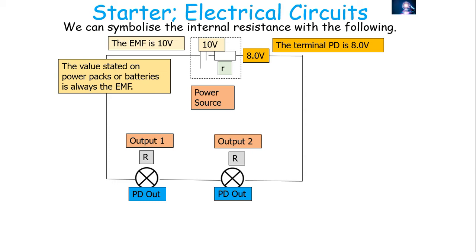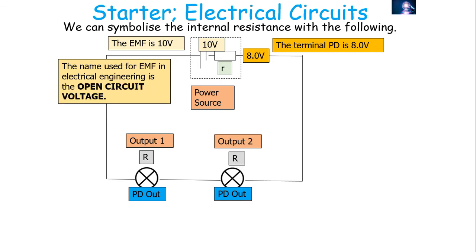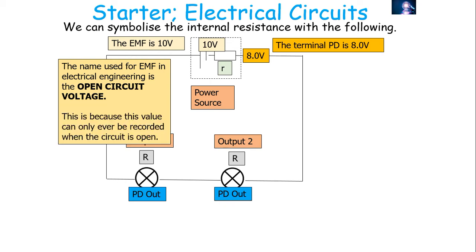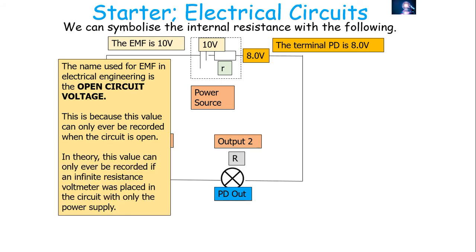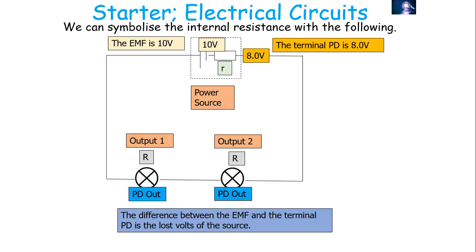The value stated on a power pack or battery is always the EMF — a theoretical value that could only be measured when a voltmeter is placed over the source, because in theory the voltmeter has infinite resistance, drawing no current and producing no internal resistance. In electrical engineering, EMF is called the open circuit voltage, because it can only be recorded when the circuit is open. With an infinite resistance, no electrons flow and no terminal potential difference is registered.